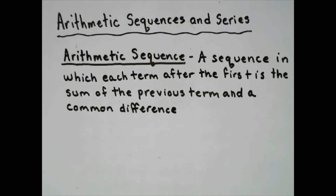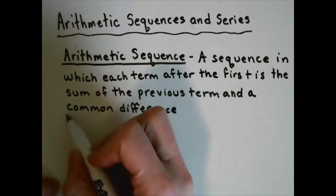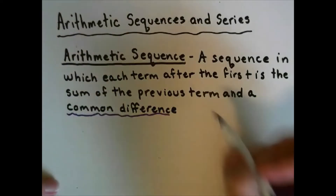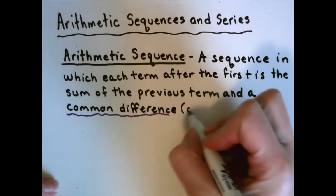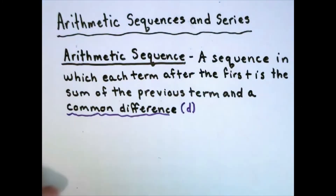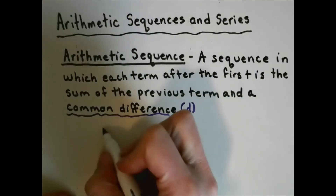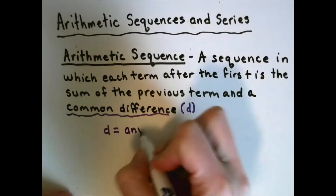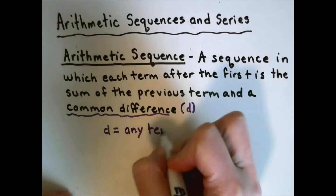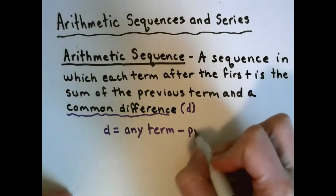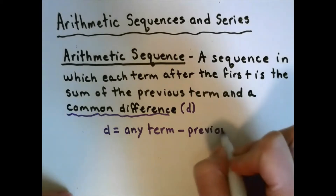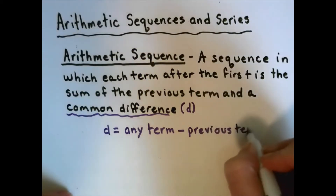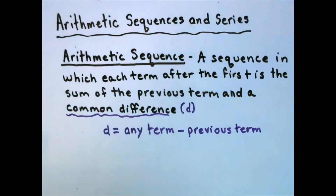An arithmetic sequence is defined as a sequence in which each term after the first is the sum of the previous term and what we call a common difference. We're going to use D for that. The common difference can be found by taking any term and subtracting the previous term — essentially, it's just whatever you're adding to get from term to term.